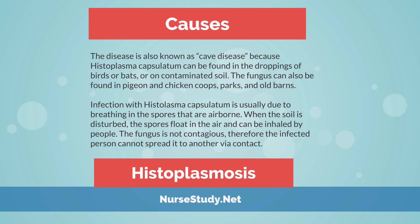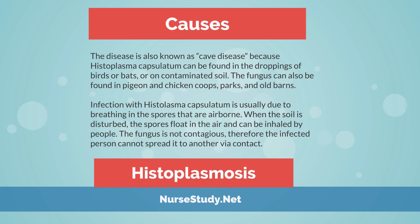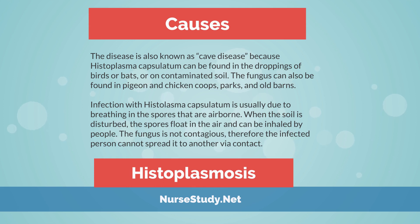Causes of Histoplasmosis: The disease is also known as cave disease because Histoplasma capsulatum can be found in the droppings of birds or bats, or on contaminated soil. The fungus can also be found in pigeon and chicken coops, parks, and old barns. Infection is usually due to breathing in airborne spores. When the soil is disturbed, the spores float in the air and can be inhaled by people. The fungus is not contagious, so an infected person cannot spread it to another via contact.